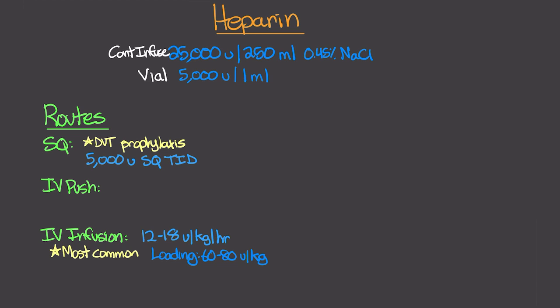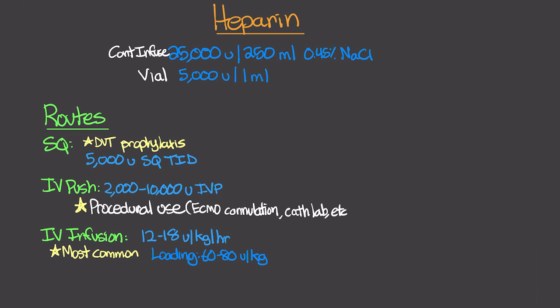It's important to know your hospital's protocol regarding loading doses before starting a heparin drip. IV push heparin, while less common, is used procedurally at doses of 2,000 to 10,000 units — for example, during ECMO cannulation or in the cardiac catheterization lab during a heart cath. This is typically followed up with a point-of-care ACT after about two minutes to assess whether additional heparin is needed.